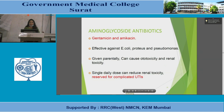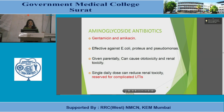Aminoglycoside antibiotics — including gentamicin and amikacin — are effective against E. coli, Proteus, and Pseudomonas. Given parenterally, they can cause ototoxicity and renal toxicity. A single daily dose can reduce renal toxicity, but this group is reserved for complicated UTIs.